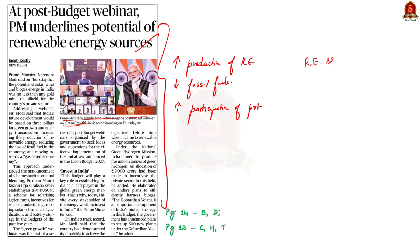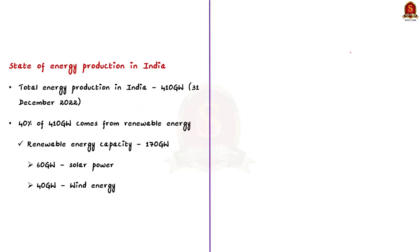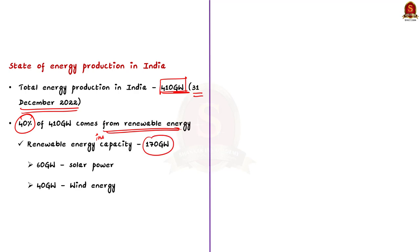We are going to learn some prelims pointers regarding the renewable energy sector in our country. The total energy production in India is about 410 gigawatts as of 31 December 2022. Out of this 410 gigawatts, nearly 40 percent comes from renewable energy. The total installed capacity of renewable energy currently in India is about 170 gigawatts.